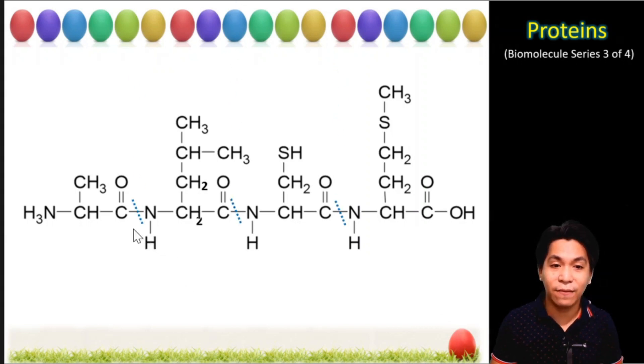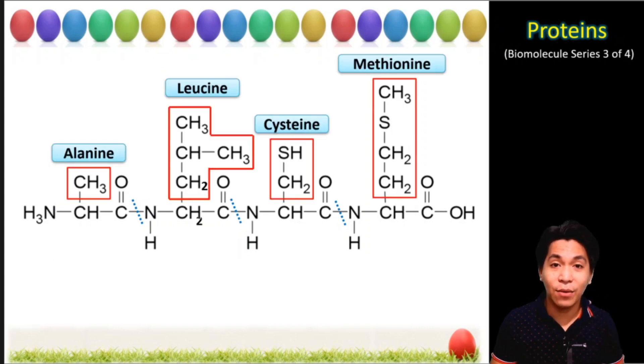So we have the C double bond O attached to nitrogen, C double bond O attached to the nitrogen and C double bond O attached to a nitrogen. This C double bond O is not attached to a nitrogen, hence this ends the sequence. Likewise, this nitrogen is not connected to a C double bond O, it means this ends also the side of this sequence. So how many amino acids are present? We have a total of four amino acids.